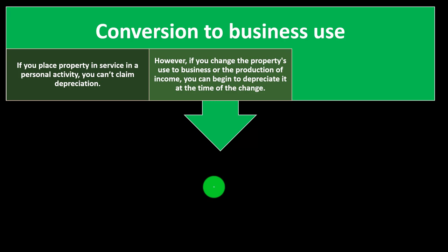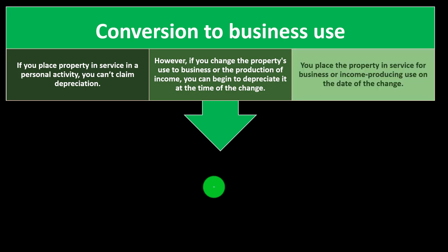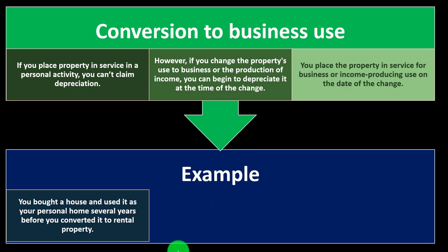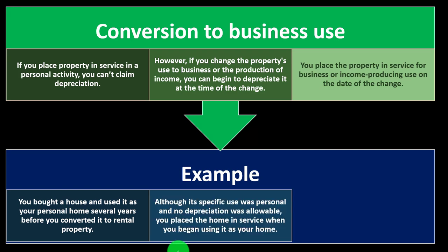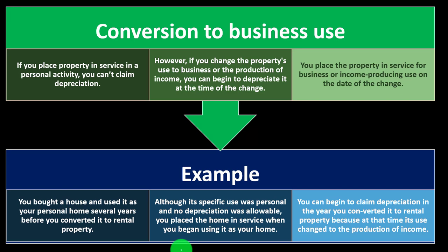One of the biggest deductions you get with rental property — one of the biggest costs you have in order to generate revenue — is the purchase of the rental property itself. That's a bit more confusing than buying inventory, because you're trying to make income on the rental property in two ways: through the rent, and through the increase in the value of the property. You place the property in service for business or income-producing use on the date of the change. Example: you bought a house, used it as your personal home several years, then converted it to rental. You can begin to claim depreciation in the year you converted it to rental property because at that time its use changed to the production of income.